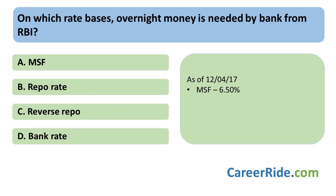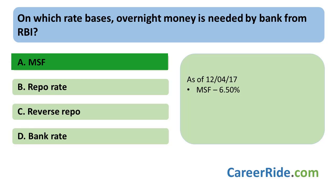The next question is: on which rate basis is overnight money needed by the bank from the Reserve Bank of India? Overnight or very short-term money is borrowed by banks under the MSF facility — Marginal Standing Facility. This rate refers to the rate at which banks can borrow funds overnight from the RBI against some government and approved securities. Banks borrow these funds only under the condition that there is a severe cash shortage or acute shortage of liquidity in the market. This facility was introduced in the monetary policy of 2011-12 and came into effect from May 9, 2011. As of April, the MSF is 6.50%.